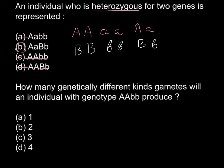Now let's move to the second question: how many genetically different kinds of gametes can an individual with genotype AA and small bb produce? Let me first show the different combinations that are possible. As you see, we have three different combinations of two alleles — one, two, and three — and we use these three combinations for each gene.